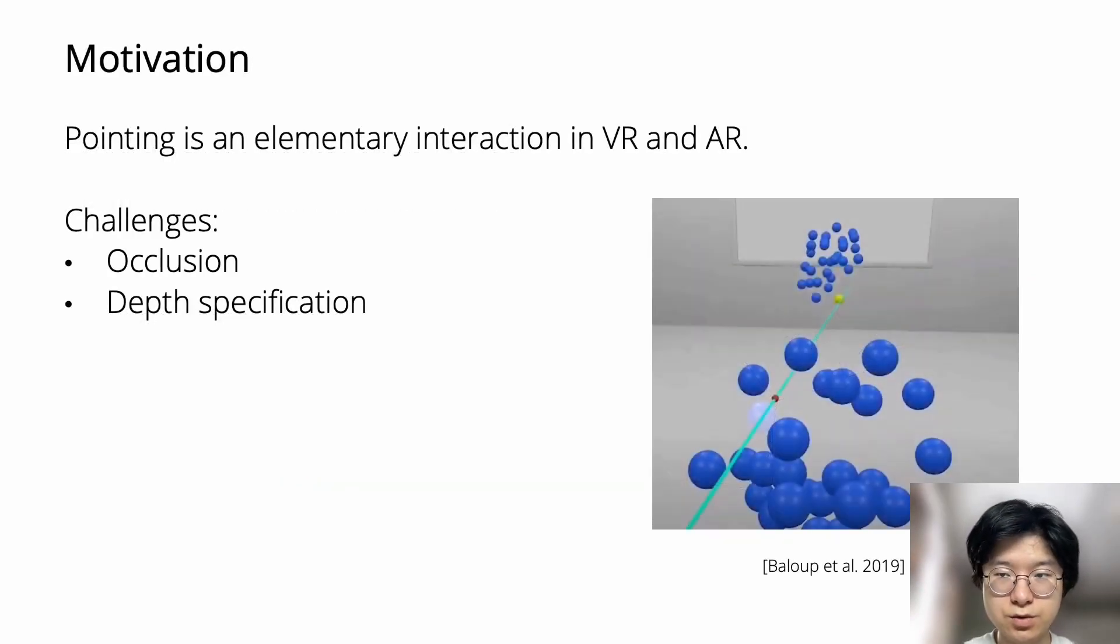Pointing is an elementary interaction in VR and AR environments. To effectively support target selection, techniques must deal with the challenges of occlusion and depth specification. This picture shows an example of such challenges. The yellow target in the further cluster was occluded by the target in the closer cluster.